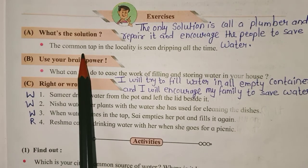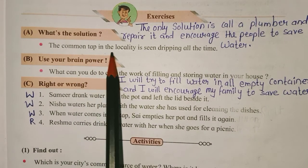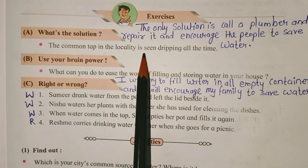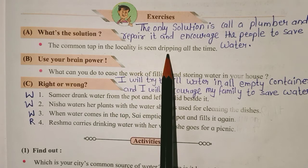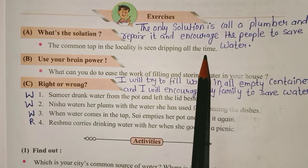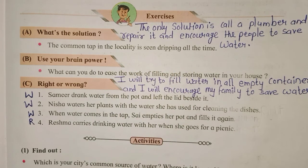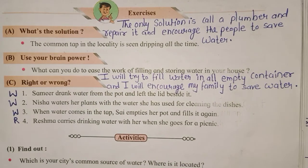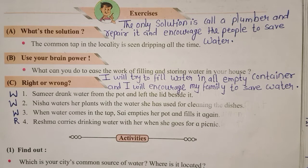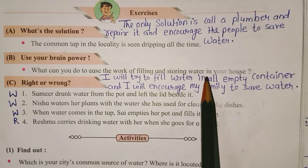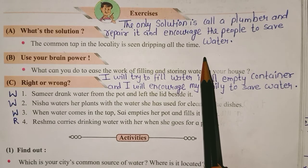The common tap in the locality is seen dripping all the time. Answer: The only solution is to call a plumber and repair it, and encourage the people to save water.